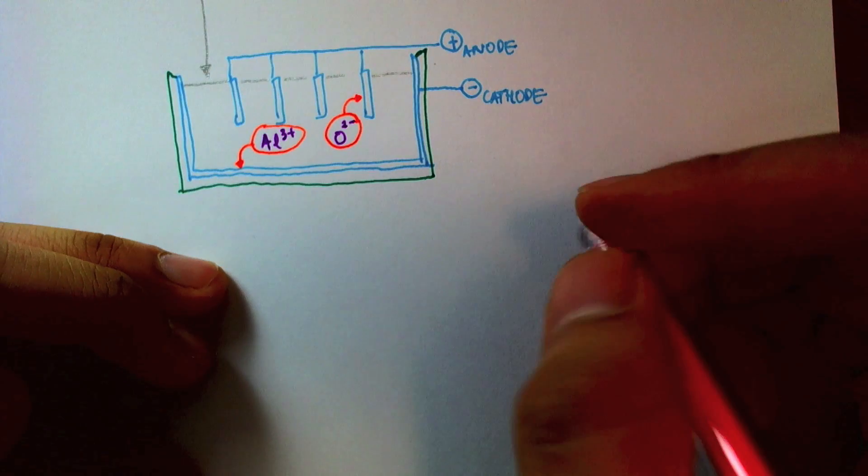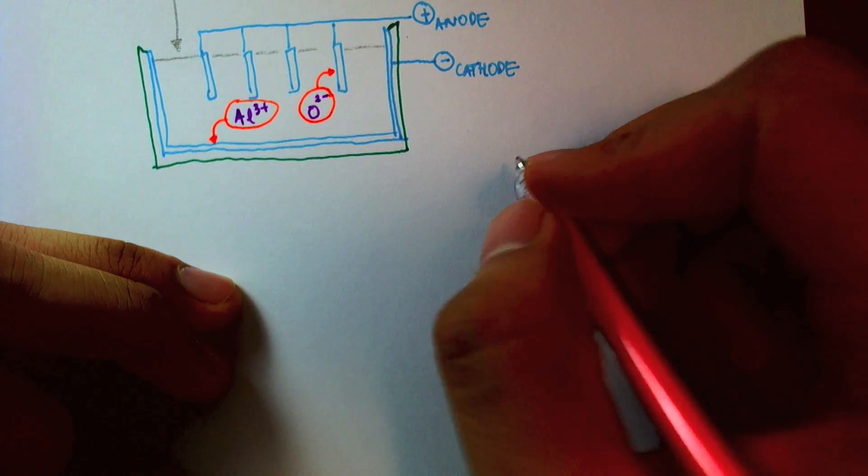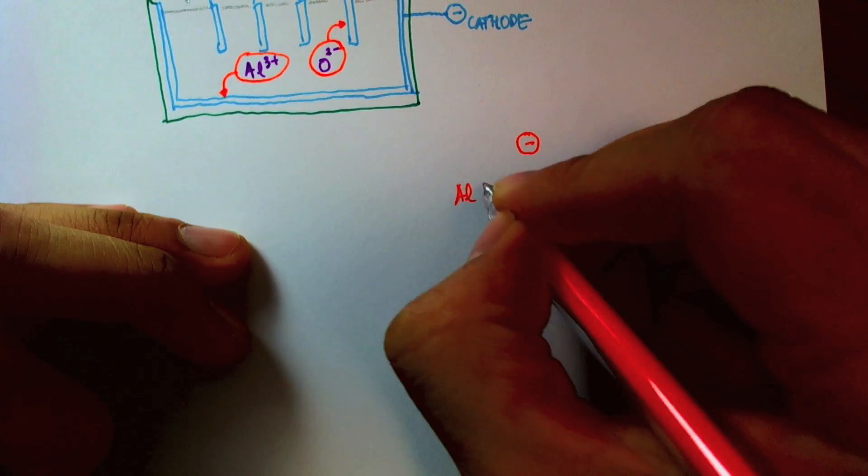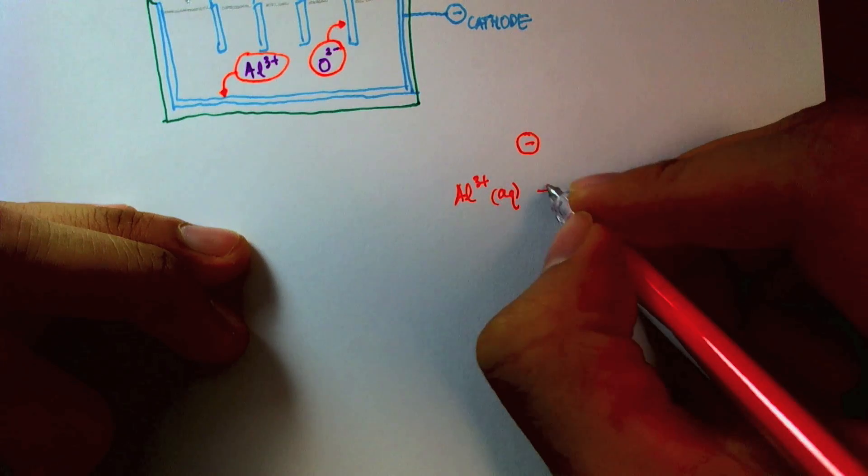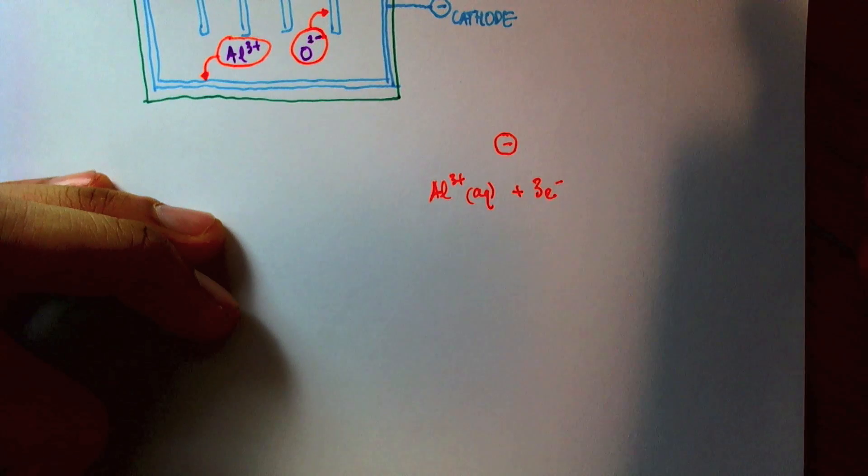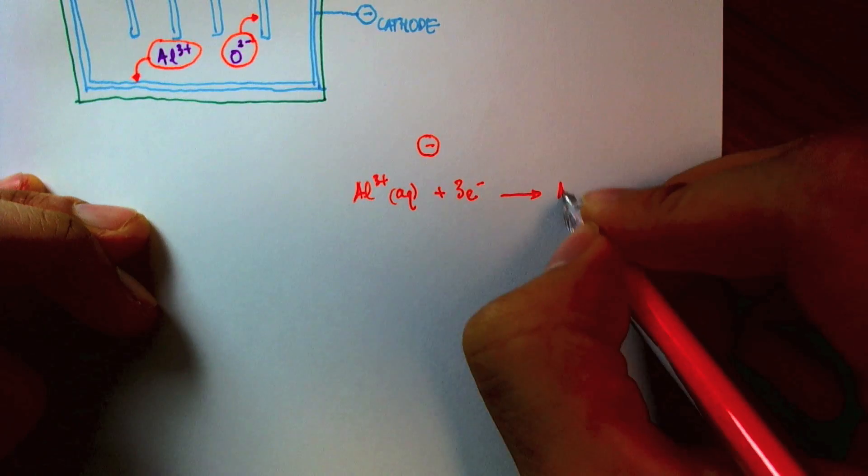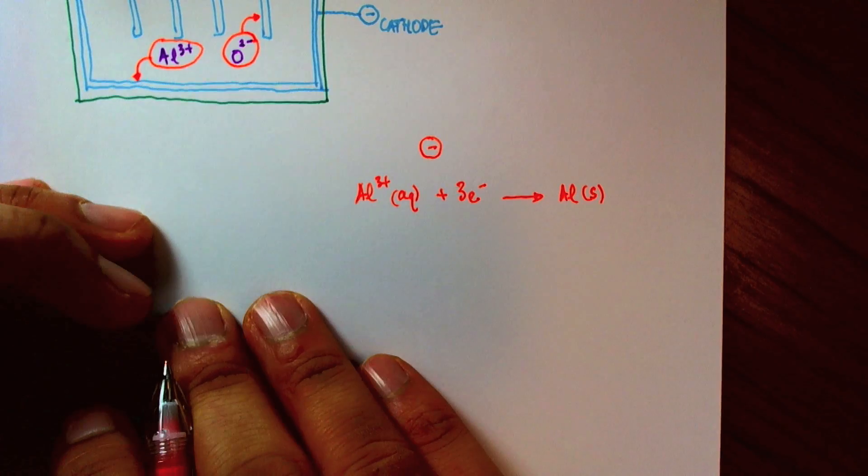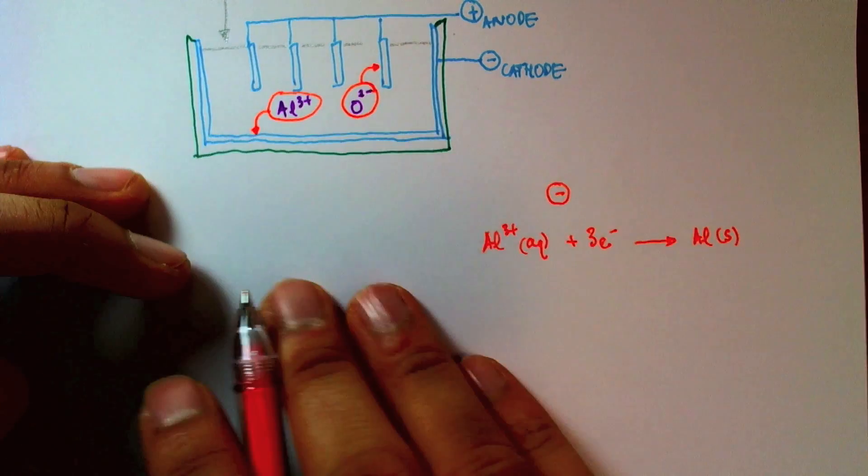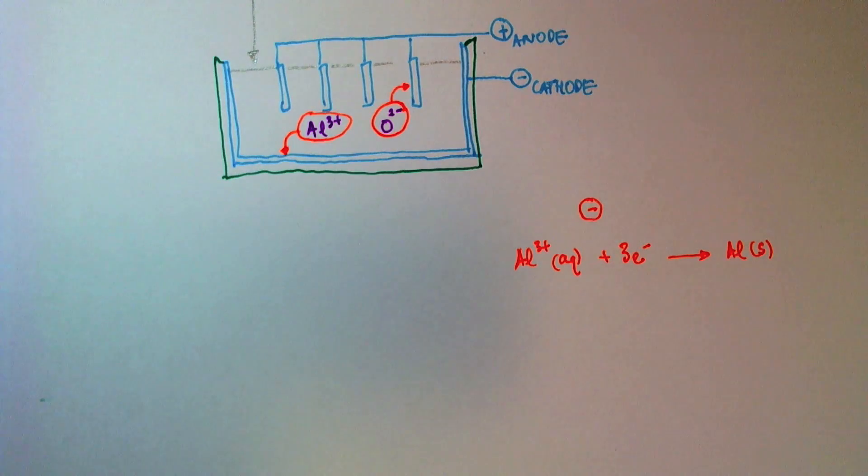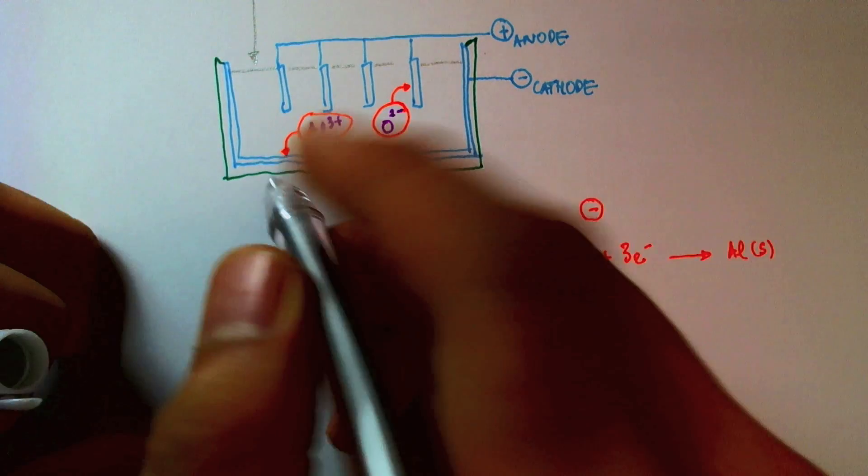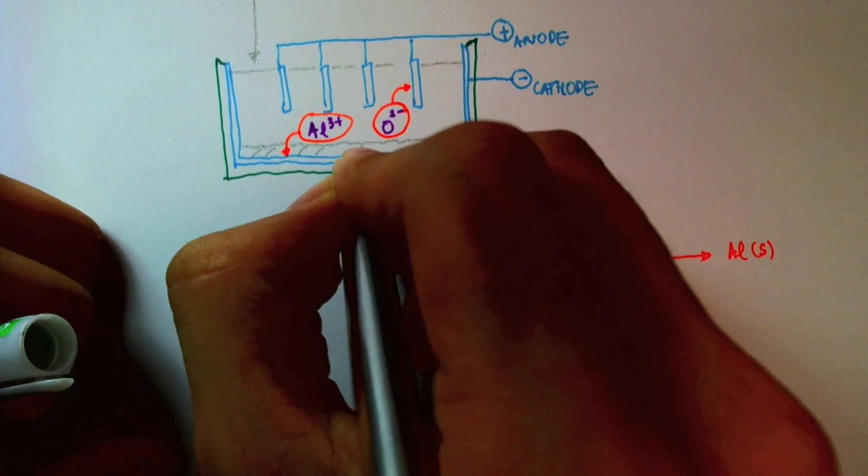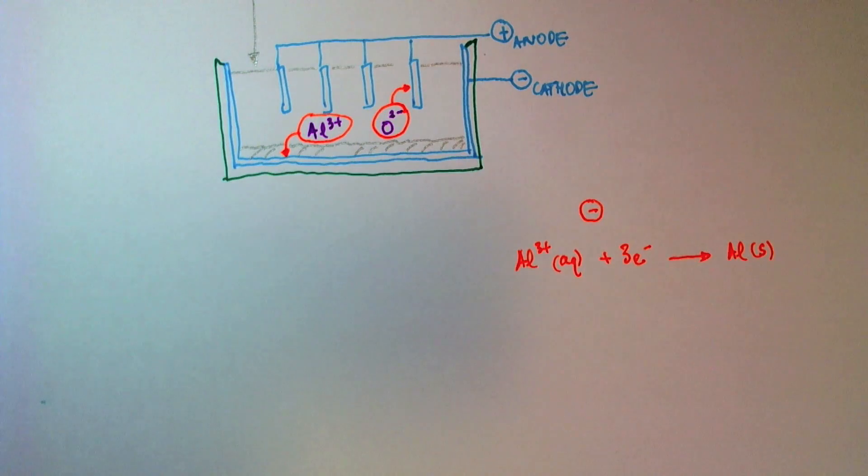So let's write our half equations for what happens at the anode and at the cathode. So at the cathode, the aluminum ions, Al³⁺, will receive three electrons to form solid aluminum. And it turns out that solid aluminum is more dense than this mixture that we have in here. So the solid aluminum will sink to the bottom of the tank. I beg your pardon, the liquid aluminum.